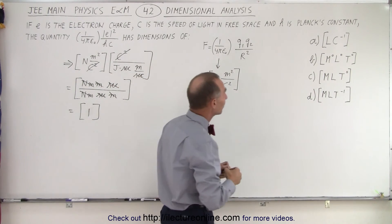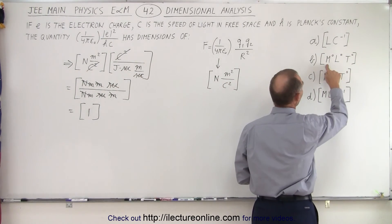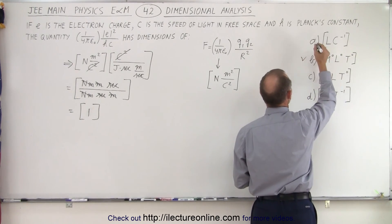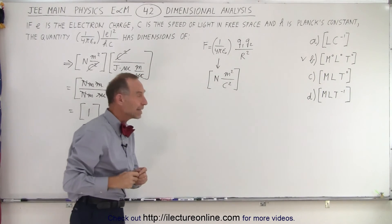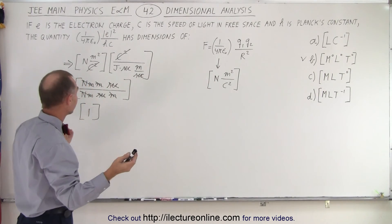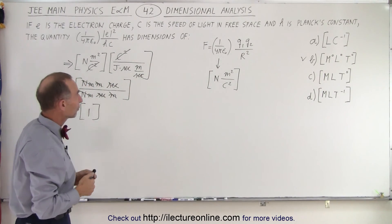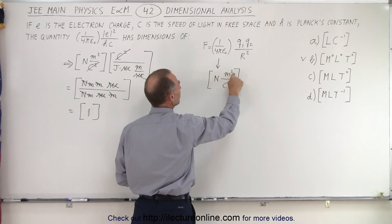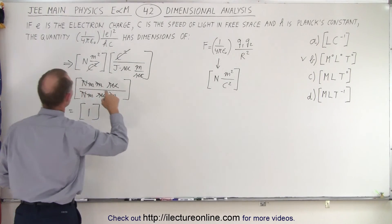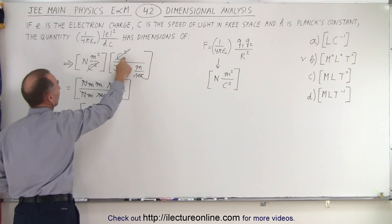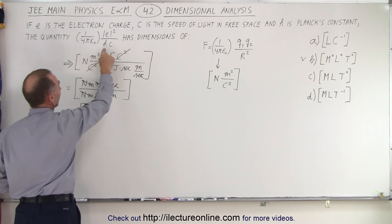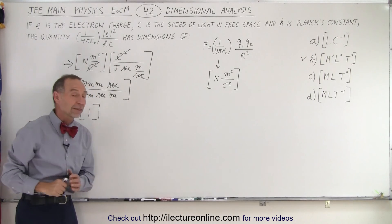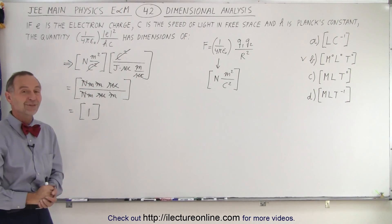Looking at the answer choices, we have M to the zero, L to the zero, T to the zero, which equals 1. So that is the correct answer — answer B. The key is to recognize that 1 over 4π epsilon sub-naught has units of newton-meters squared per Coulomb squared, the electron charge gives Coulombs squared, Planck's constant gives joules times seconds, and speed of light gives meters per second. Then we simply simplify algebraically, and that is how it's done.